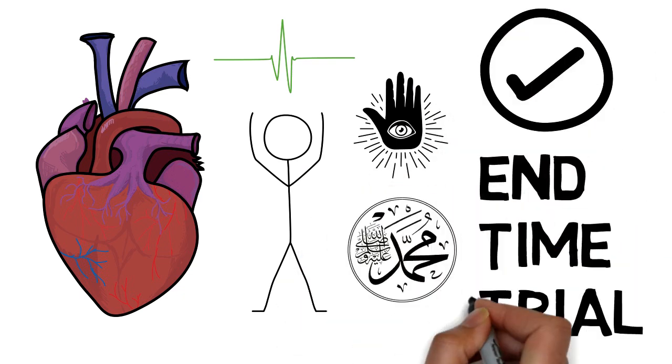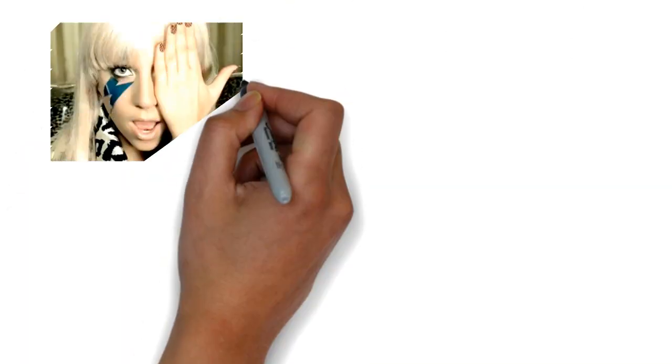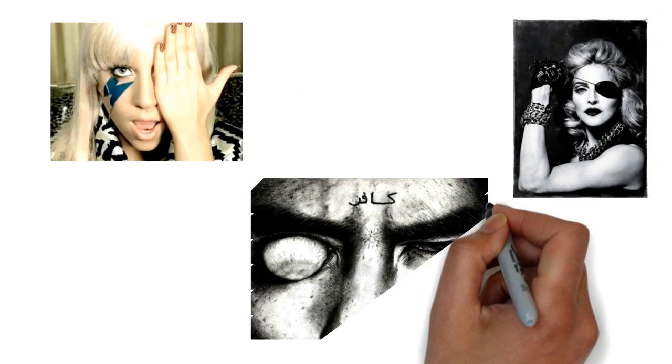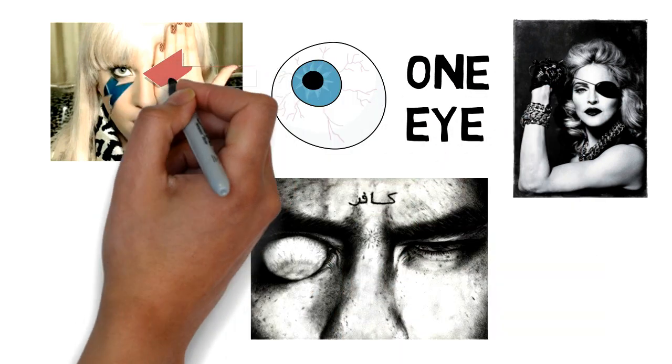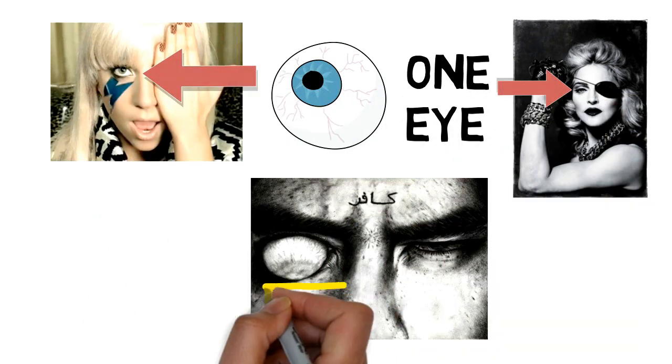And the Prophet Muhammad said, every prophet has warned his people about the Dajjal, but I will tell you something that no other prophet told his people. He only has one eye. So that was the tradition that he said about the Dajjal, that he would have one eye.